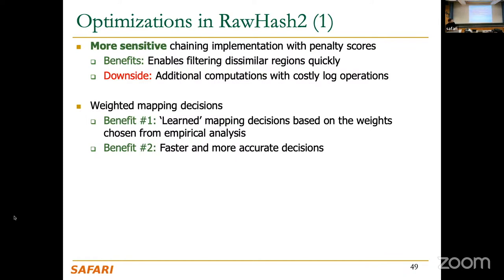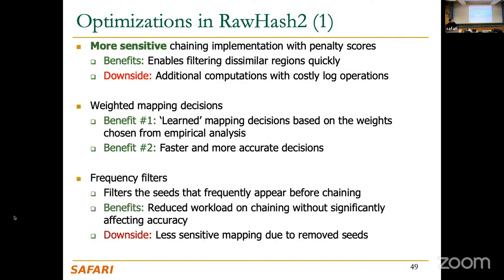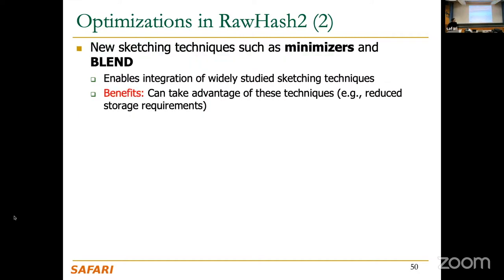RawHash-2 also integrates frequency filters that remove some hash value matches before applying chaining, substantially reducing chaining workload. The downside is that removing these hash values can reduce sensitivity slightly. We also apply new sketching techniques — specifically, we implement minimizers and evaluate their benefits.